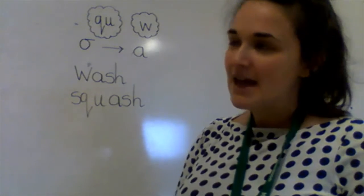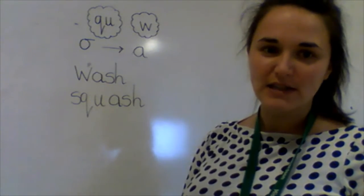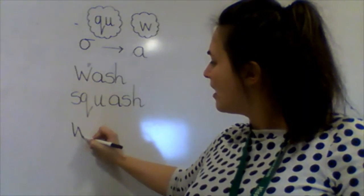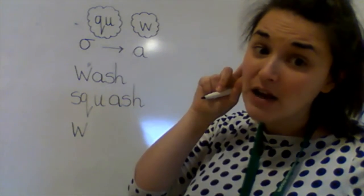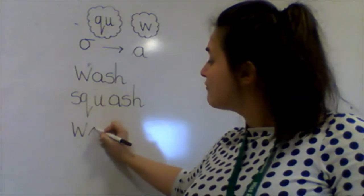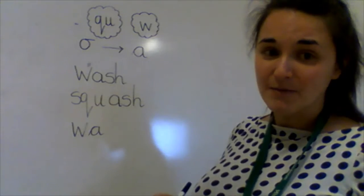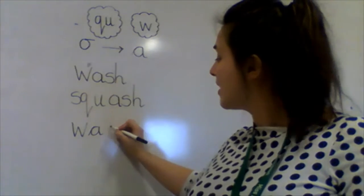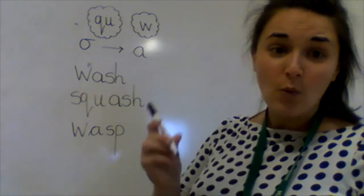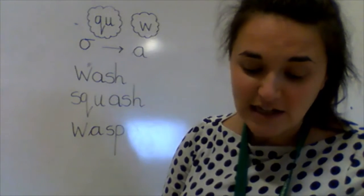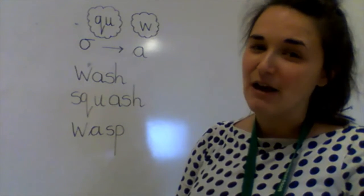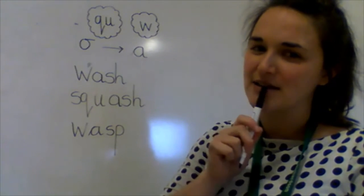Let's do another one together. I want to write the word 'wasp' — there was a wasp buzzing around. Now it sounds like an 'aw', but I can hear that 'aw' coming straight after the 'w', so I have to write it as an 'a'. Wasp — and the rest of the word I can hear and sound out. With your pen and paper, could you have a go at writing the word 'waffle'? I had a waffle for my breakfast. Now think carefully about the ending on that word.